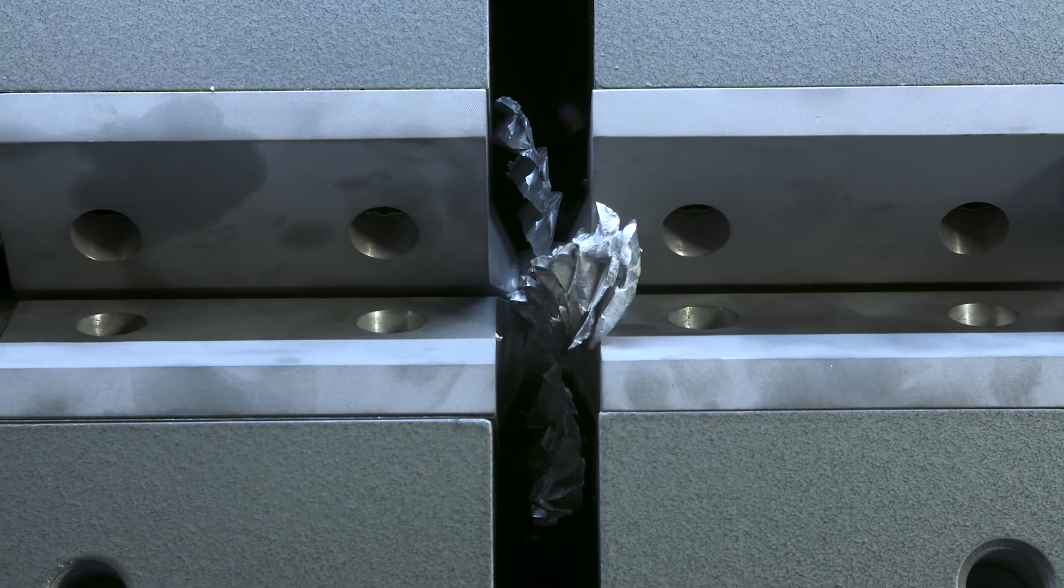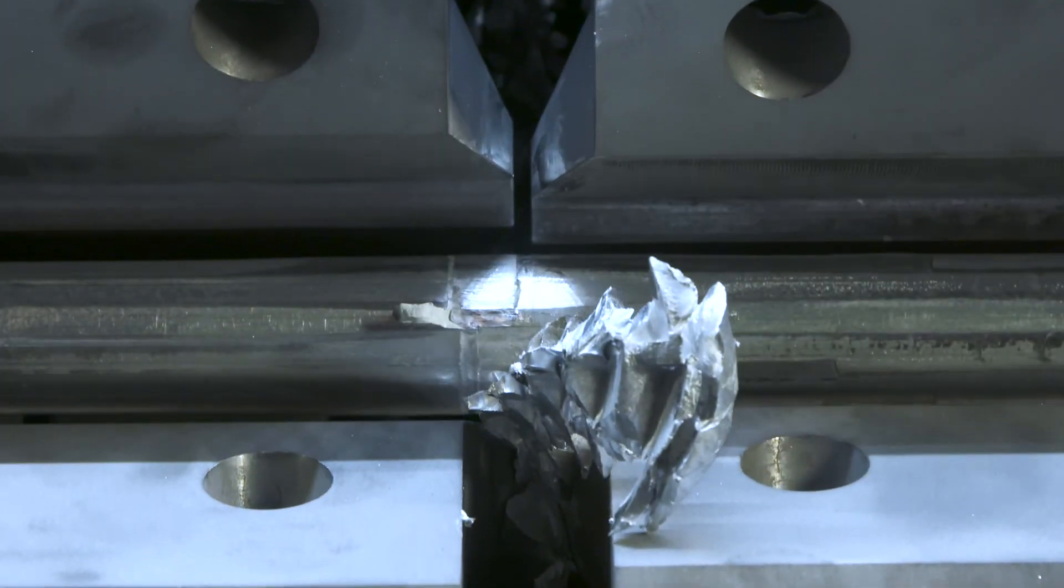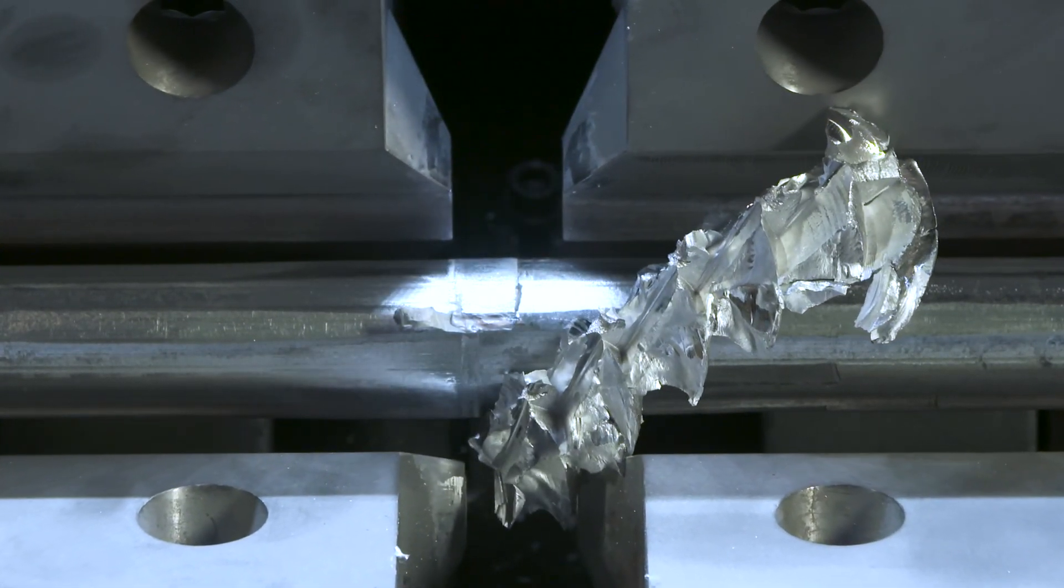After the weld sequence is completed, the machine makes one or more additional movements to remove the flash. The dies and clamps are then opened to release the welded rod.